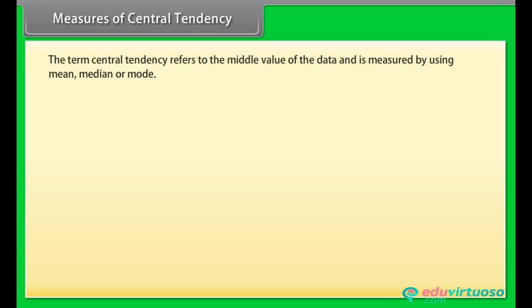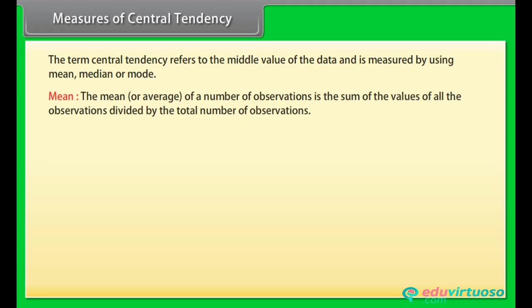Measures of central tendency: The term central tendency refers to the middle value or a typical value of the data, and is measured using mean, median, or mode. Mean: The mean or average of a number of observations is the sum of the values of all the observations divided by the total number of observations.